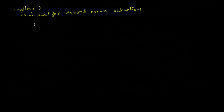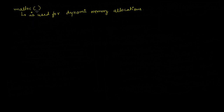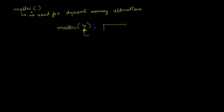Now, for example if we write a program like this with main, the malloc function takes an integer number as an input argument. So malloc is going to take some integer number as an argument — let's suppose that number is 4 — and then it is going to allocate 4 bytes of memory.